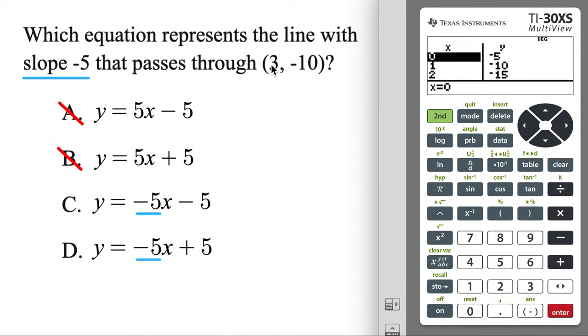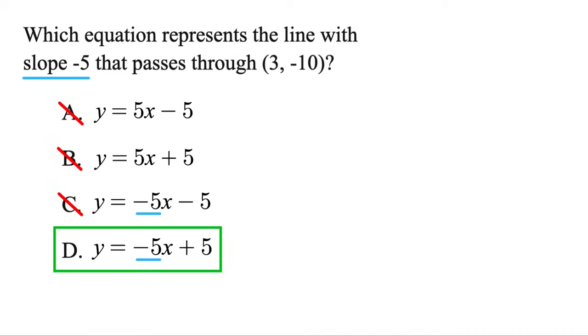And we want to see when X is 3, is Y negative 10. Scroll down. 3 negative 20, no good. So it's not C. It's definitely D.